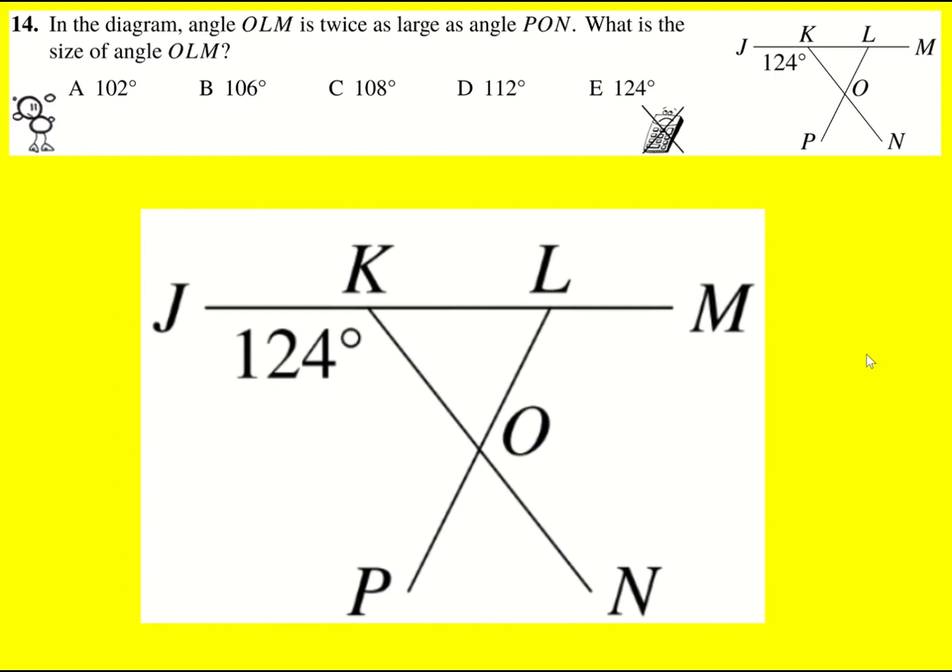Let's take a look at this diagram. We are told that angle OLM is twice as large as angle PON. So PON is this one here. You have to understand the angle notation - it's the angle that's kind of in between.